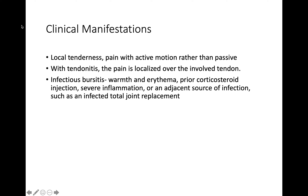Tendinitis causes pain, sometimes weakness, and limited joint movement. Infectious bursitis presents with warmth and erythema and can sometimes be due to a prior corticosteroid injection for severe inflammation. The onset of bursitis pain may be gradual or sudden and may limit active movement. Shoulder bursitis impairs arm abduction. Bursitis in the knee produces pain when climbing stairs; in the hip, pain occurs while crossing the legs or lying on the affected side.